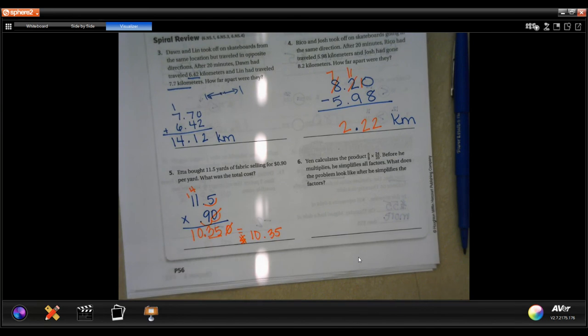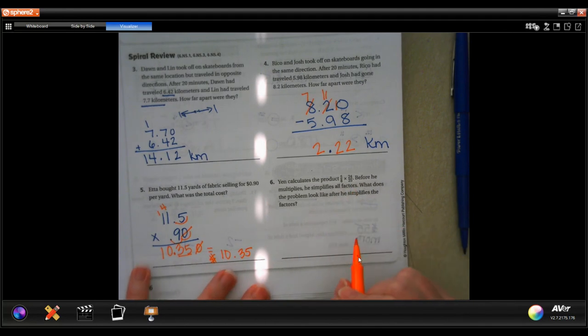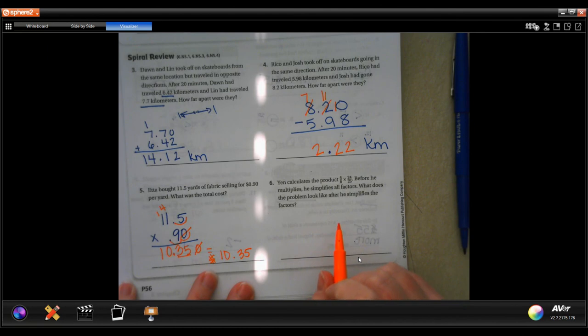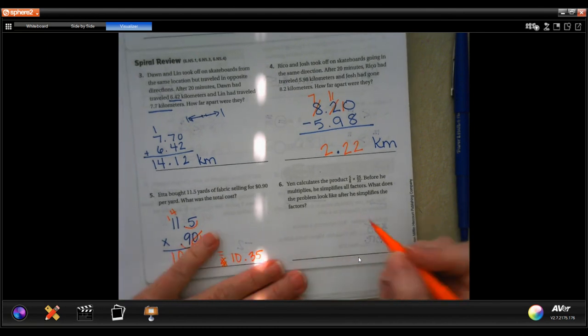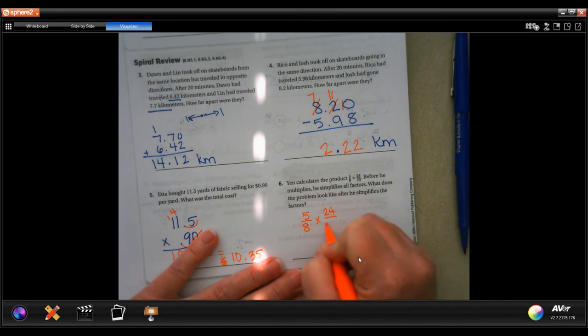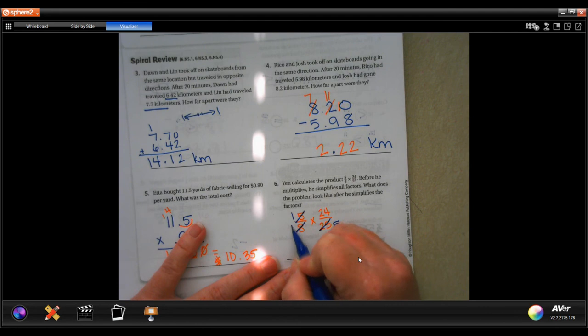Young calculates the product of 5/8 times 24/25. Before he multiplies, he simplifies all the factors. What does the problem look like after he simplifies the factors? So all you have to do is simplify them. Five goes into five once, five goes into 25 five times. Eight goes into eight once, eight goes into 24 three times. So it would look like 1/1 times 3/5. That's it.